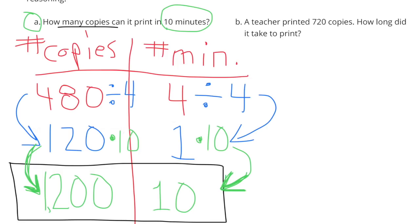To make 10 minutes, I multiplied the 1 minute times 10. And since I multiplied the minutes times 10, I needed to multiply the number of copies by 10. And I got 1,200. This machine can make 1,200 copies in 10 minutes.